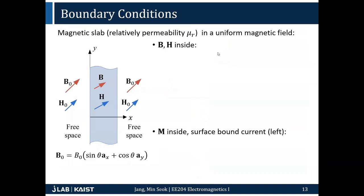The exercise is very similar to what you've already solved, but the difference is that now the B field on the outside is no longer normal to the surface — it makes an angle theta. There is a parallel component and a normal component. Try to find B and H inside the slab, and then the magnetization inside the slab. I'll give you a few minutes.